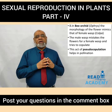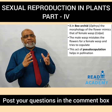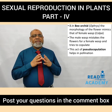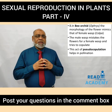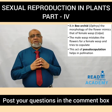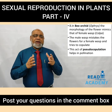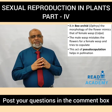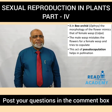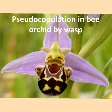In bee orchid or Ophrys, the morphology of the flower mimics that of the female wasp. The male wasp mistakes the flower for a female wasp and tries to copulate. This act of pseudocopulation helps in pollination. Here you can see the wasp having pseudocopulation in an orchid.